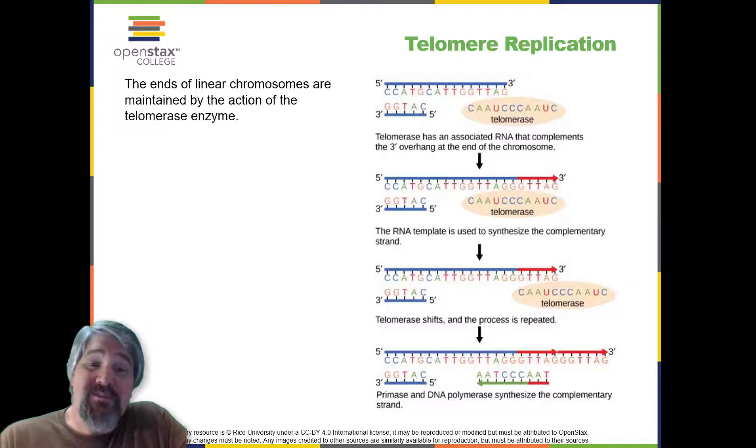The discovery of the enzyme telomerase helped in the understanding of how chromosome ends are maintained. The telomerase attaches to the end of the chromosome, and complementary bases to the RNA template are added on the end of the DNA strand. Once the lagging strand template is sufficiently elongated, DNA polymerase can now add nucleotides that are complementary to the ends of the chromosomes. Thus, the ends of the chromosomes are replicated.